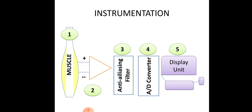In EMG there are around four types of electrodes: surface electrode, fine wire indwelling electrode, needle electrode, and ground electrode. These are the sensors which collect the signals arising from the muscle to the amplification system of the EMG.